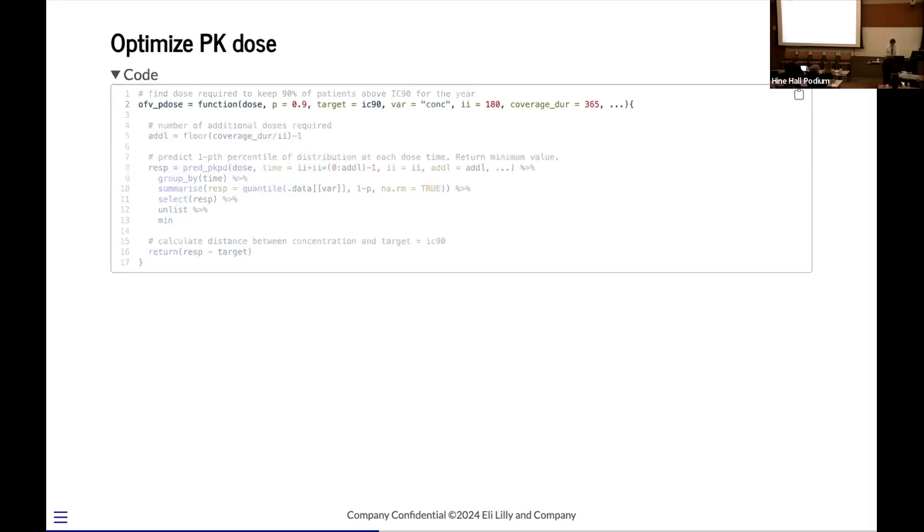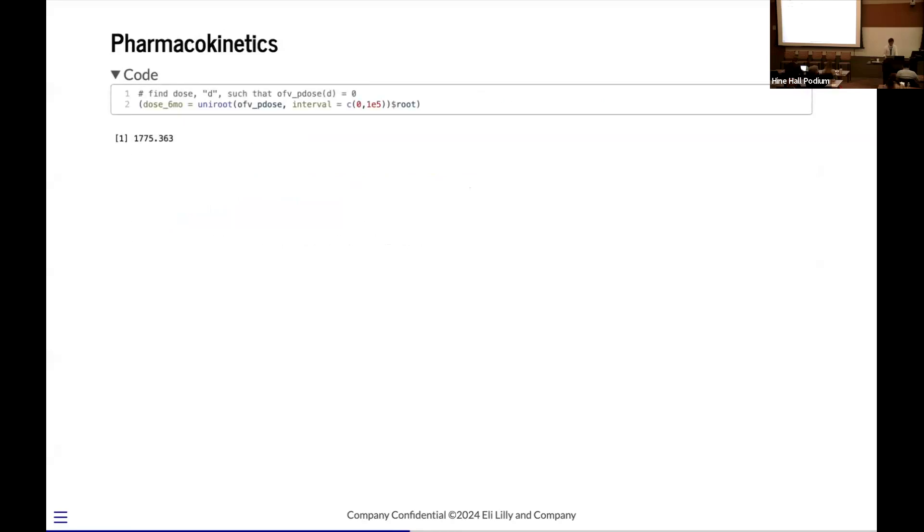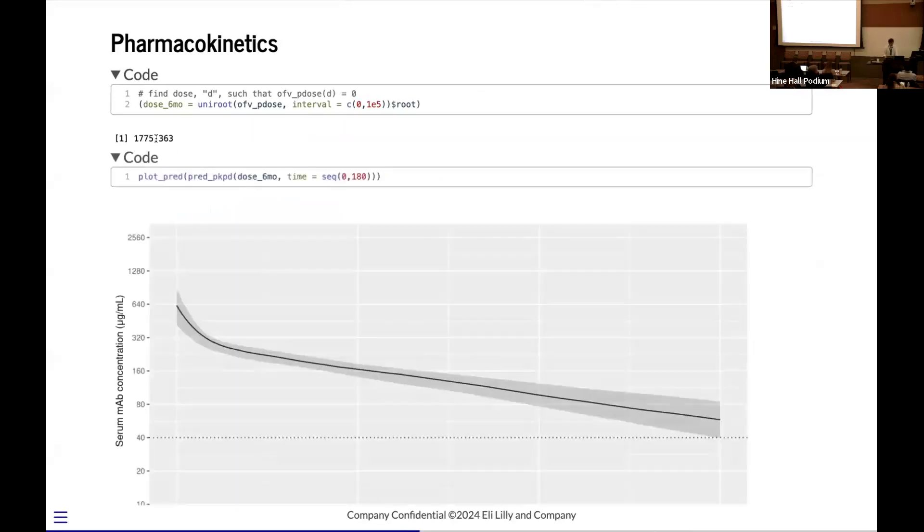Implemented in R, this is what it looks like. We start by inputting a dose. We have a function that's going to predict our response and calculate the 10th percentile. And then we return the distance between that and the target. And so running that, we can simply pass this into an optimizer that tells us, okay, well, the dose that you needed to maintain this criterion is 1,775 milligrams. And when we plot it, lo and behold, it fits just right.